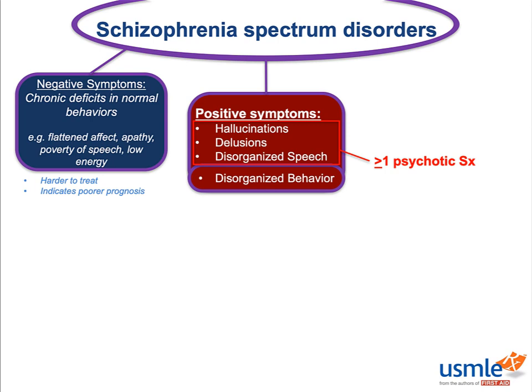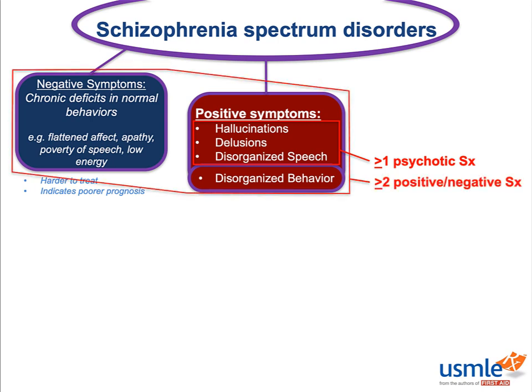This brings us to the second rule of schizophrenia. In addition to a classically psychotic symptom, you need a total of two or more of the positive and negative symptoms combined in order to be diagnosed with schizophrenia. The negative symptoms and disorganized behavior act almost like minor criteria in that they're not considered cornerstone traits, but they do contribute to the diagnosis.